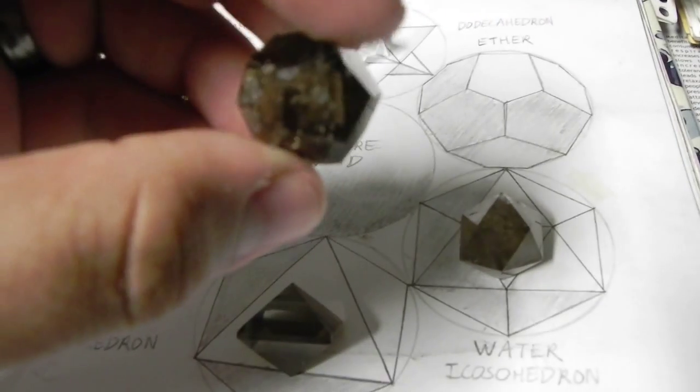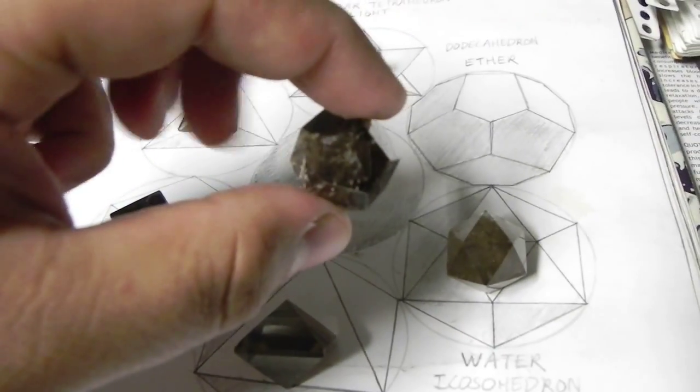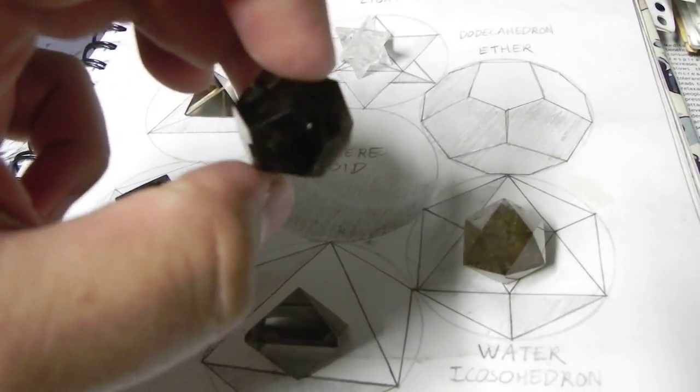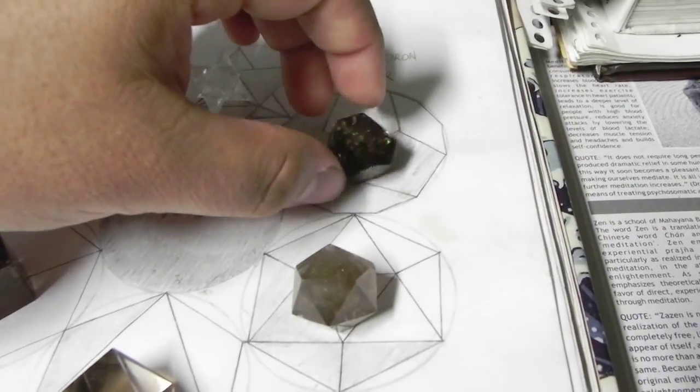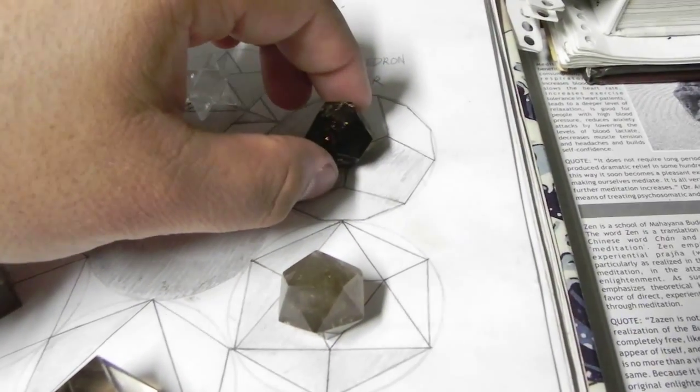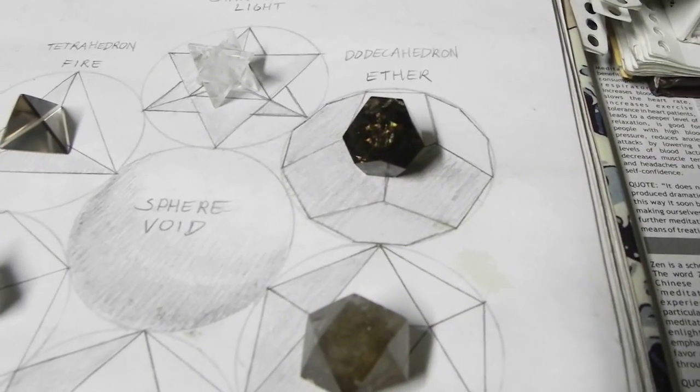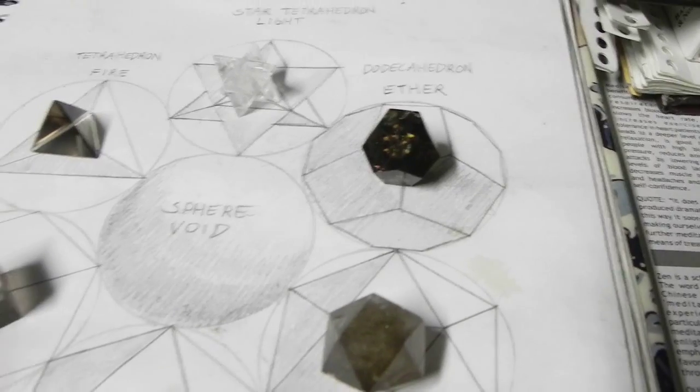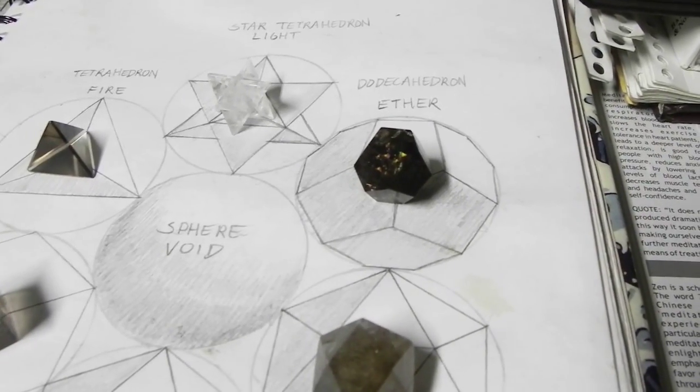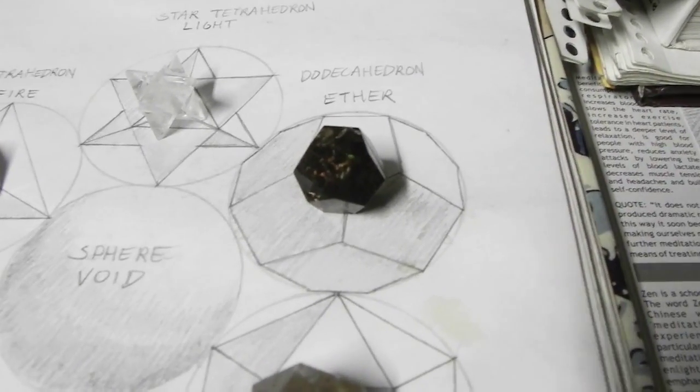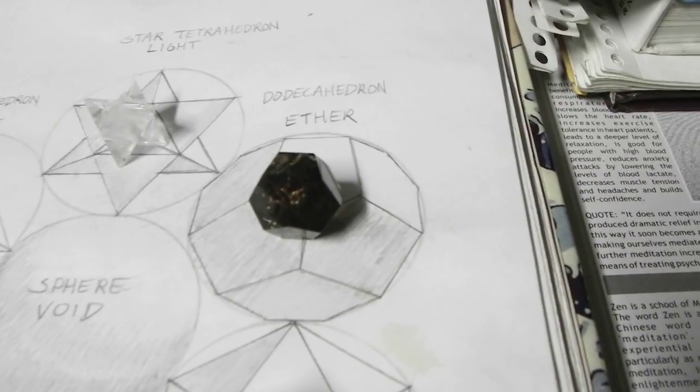Then I have the dodecahedron, a smoky quartz version of it. And this represents ether. This one has 12 sides. It's what represents prana or ether that runs through the universe, which most scientists still have trouble even understanding that ether is everywhere in the universe. But that is one of the most important of the solids because it's everywhere.